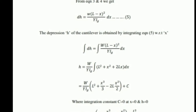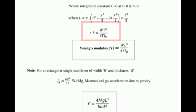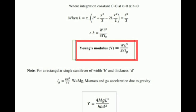After integration we get: W / (Y × Ig) × [L²x + x³/3 − Lx²] + C, where C is the constant of integration. Applying the boundary condition x = 0 and h = 0, the constant C = 0, and we obtain the equation for depression: h = WL³ / (3YIg). Therefore, Young's modulus Y = WL³ / (3h × Ig).